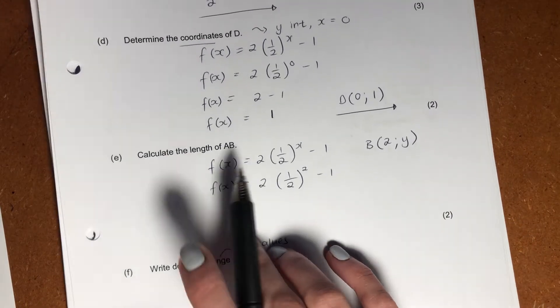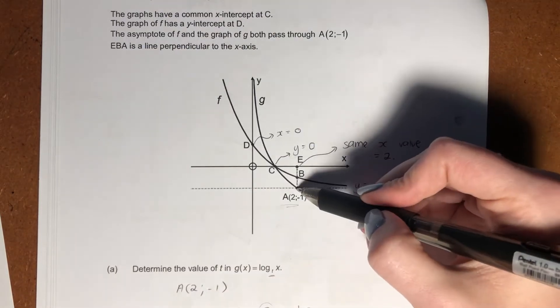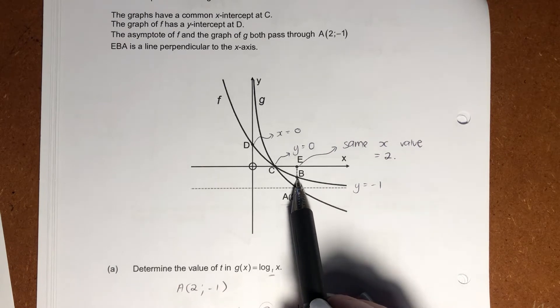So it says, what is the length AB? Now, the length AB is alluding to the length between these two points here. We have the coordinates of A, but we don't have the coordinates of B.